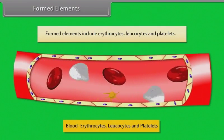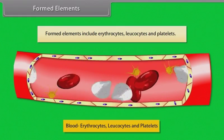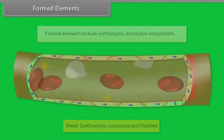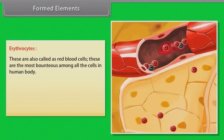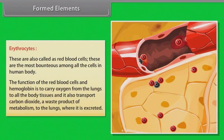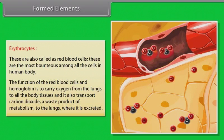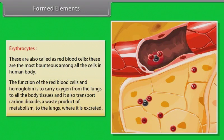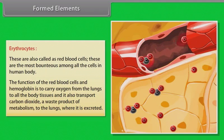Formed elements include erythrocytes, leukocytes and platelets. Erythrocytes, also called red blood cells, are the most abundant among all the cells in the human body. The function of red blood cells and hemoglobin is to carry oxygen from the lungs to all the body tissues, and to transport carbon dioxide, a waste product of metabolism, to the lungs where it is excreted.